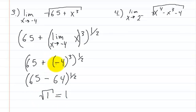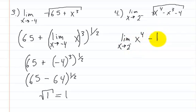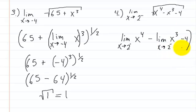Now for problem 4: the limit of the square root of x to the fourth power minus x cubed minus 4 as x approaches 2 from the left. We apply the limit to each term: the limit of x to the fourth power as x approaches 2 from the left, minus the limit of x cubed as x approaches 2 from the left, minus 4 — all to the one-half power.